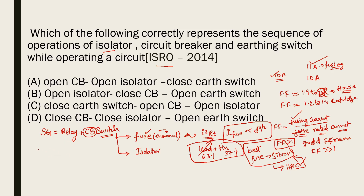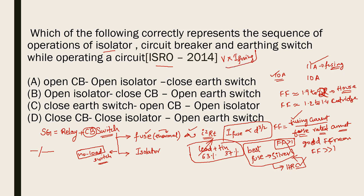Next, the isolator: its circuit symbol is distinct. An isolator is also called a no-load switch because it is operated only under no-load conditions — there should be no current during its operation. Regarding ratings, the rating of a fuse is system voltage × fusing current. More generally, the rating of any switch equals system voltage × switching current, where switching current is the current flowing through the switch at the time of making or breaking.